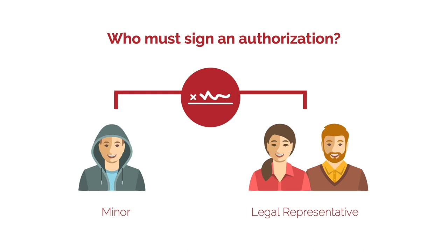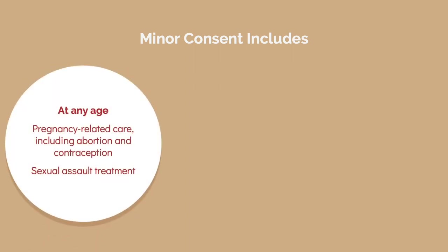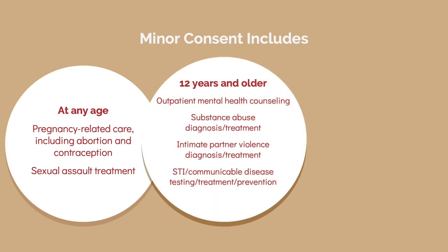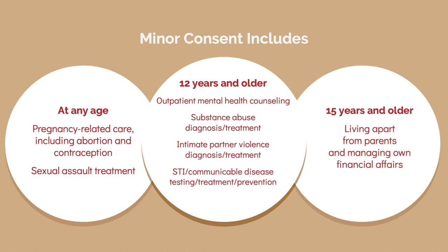Authorization forms are important. Who must sign an authorization? In California, the minor must sign if records relate to services that a minor consented to or could have consented to; otherwise, a legal representative — typically a parent or guardian — signs. In California, minors can consent to pregnancy-related care and sexual assault services at any age. Youth who are 12 or older can consent to outpatient mental health counseling, substance abuse diagnosis and treatment, diagnosis and treatment of intimate partner violence, and testing, treatment, and prevention for STIs. Youth who are 15 or older living apart from their parents and managing their own financial affairs can consent to their own health care.